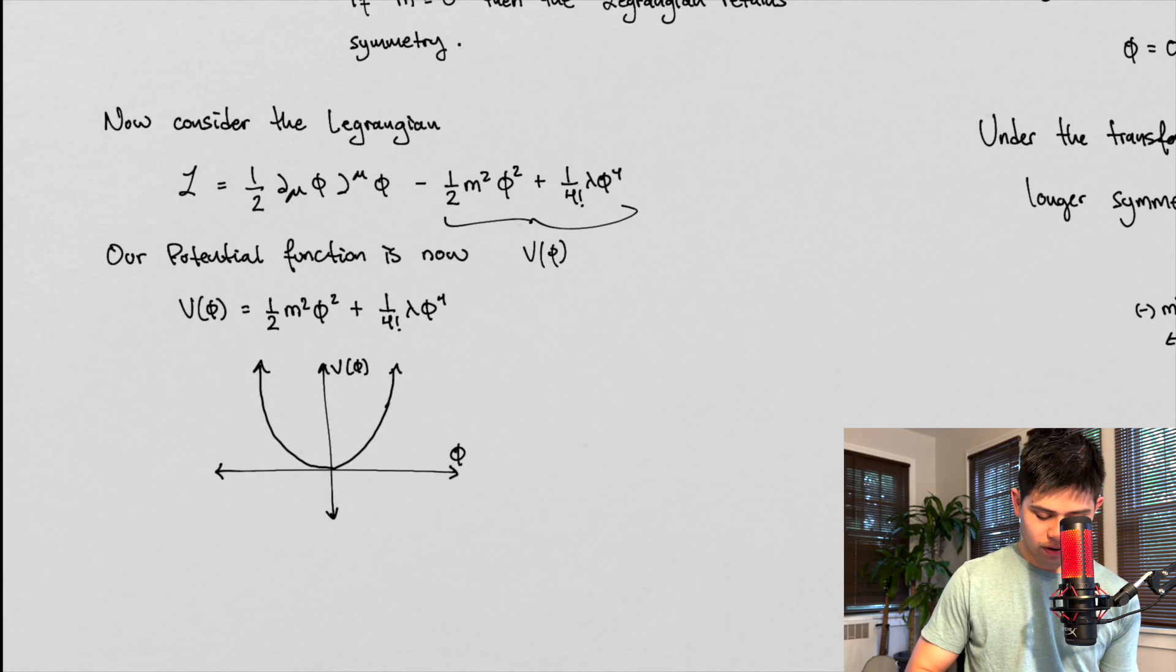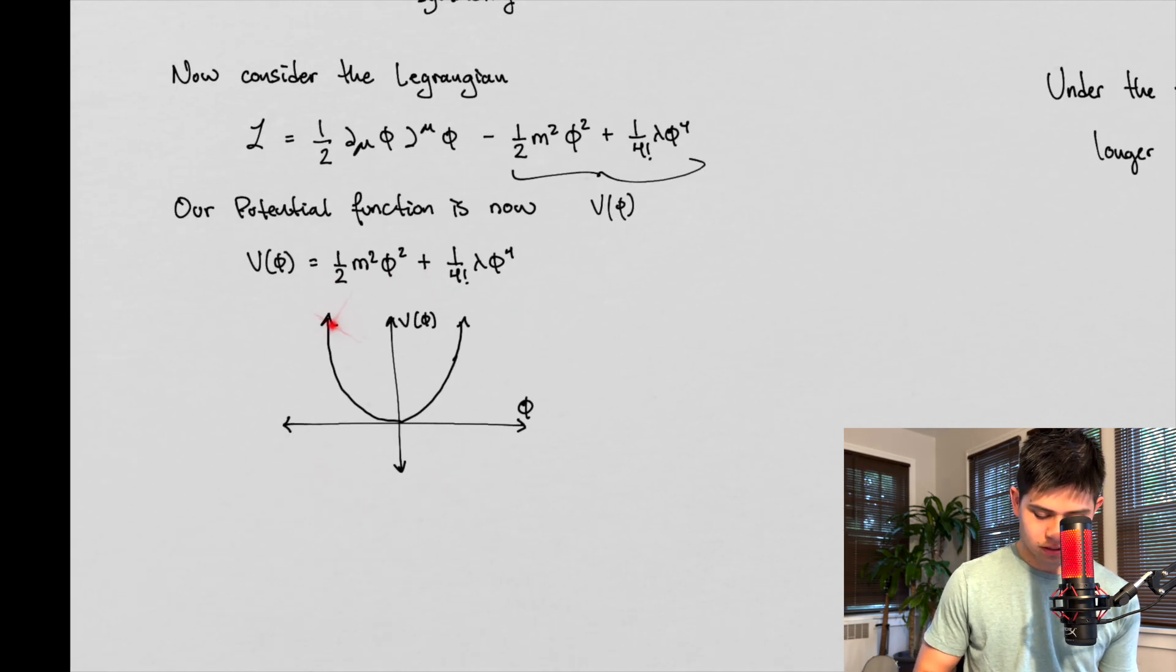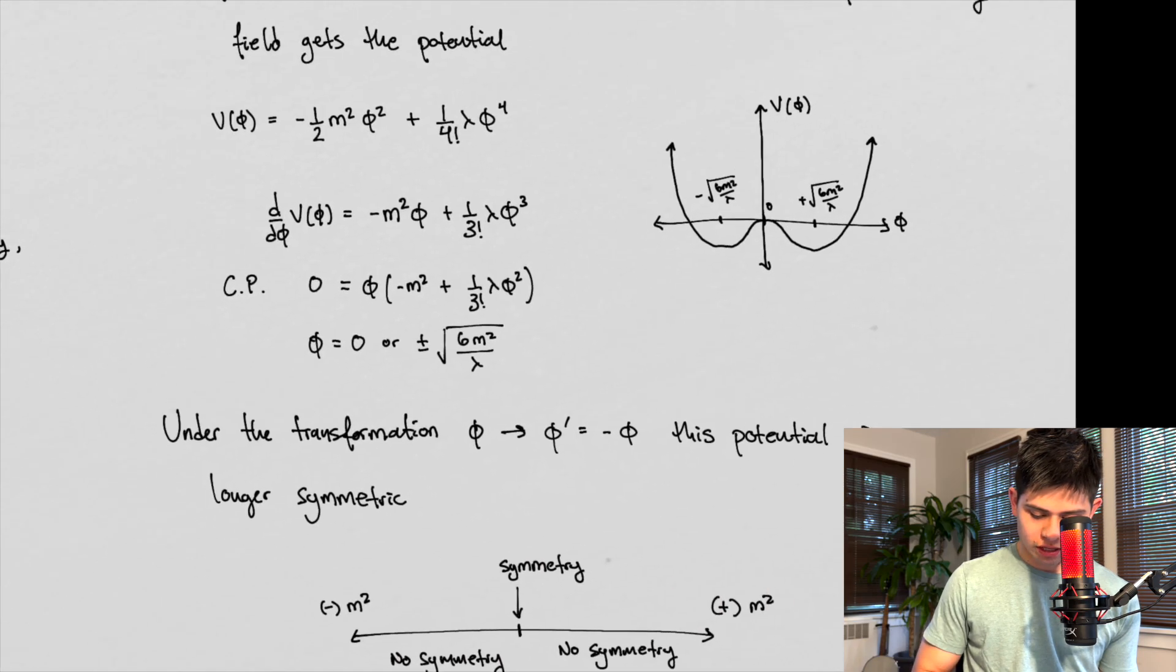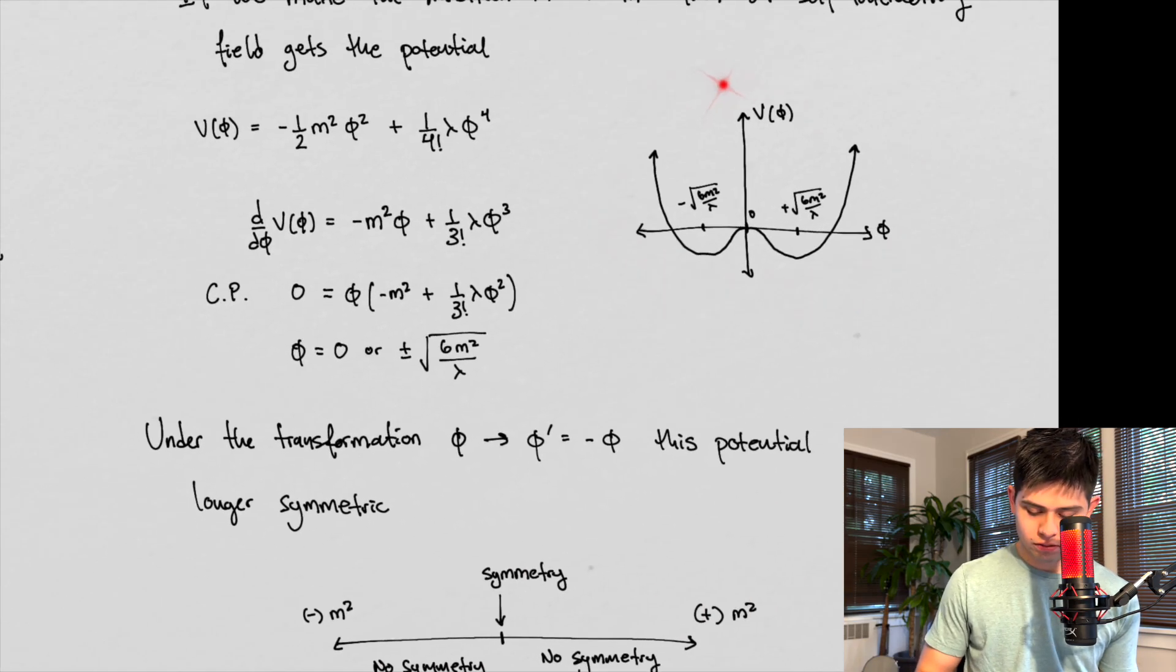All right, so we went from a graph, we went from a potential that looks like this, to a potential now that looks like this, with two, with three critical points, actually, and one at zero. We don't want to forget that one is zero.